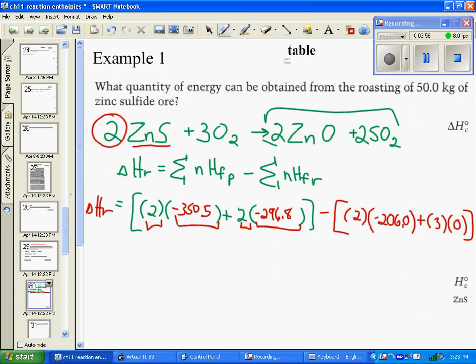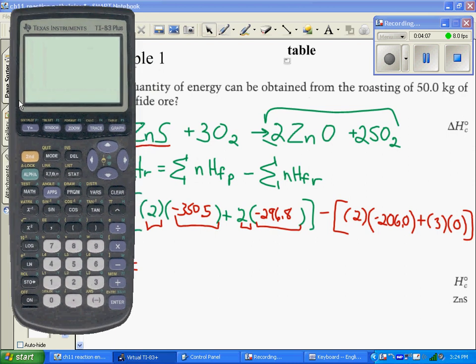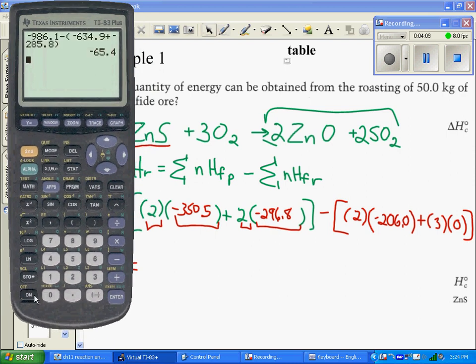So now we're ready to actually plug these numbers in to get the energy of reaction, energy change in the reaction. So we will bring up our calculator here, and start plugging in these numbers. We clear that off. So we have 2 times your negative 350.5, and 2 times your negative 296.8. From that we subtract 2 times negative 206, and we get a positive 170.9 joules.